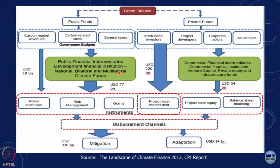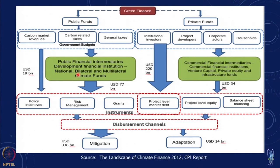We would like to take a look at the landscape of climate finance — a 2012 report which gives an idea of the different kinds of financing available for green energy. You can differentiate between public funds and private funds. In the case of public funds, there could be carbon market revenues, carbon-related taxes and general taxes. Some part of general taxes can be used to provide funds to public financial intermediaries, development financial institutions, and national bilateral and multilateral climate funds.